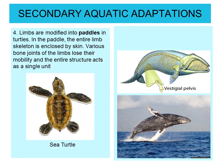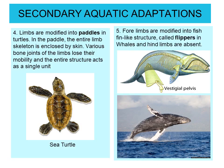The limbs are modified into paddles in turtles. In the paddle, the entire limb skeleton is enclosed by the skin; various bone joints of the limb lose their mobility and the entire structure acts as a single unit. In some cases, forelimbs are modified into fish fin-like structures called flippers, as in the case of whales, and the hind limbs are absent — only a vestigial pelvis remains visible.